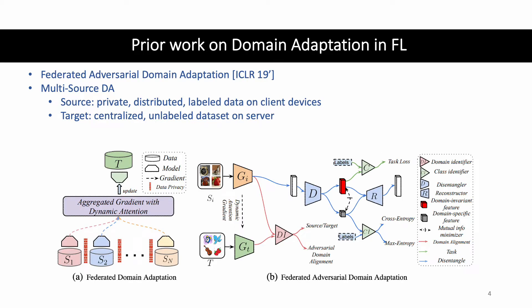A prior work proposes Federated Adversarial Domain Adaptation. They assume that the private and distributed client data is labeled, and there is a centralized unlabeled dataset on the server. Their goal is to train a federated learning model that performs well on the unlabeled dataset on the server. However, this scenario is not always practical, since the users are unlikely to label their own data.